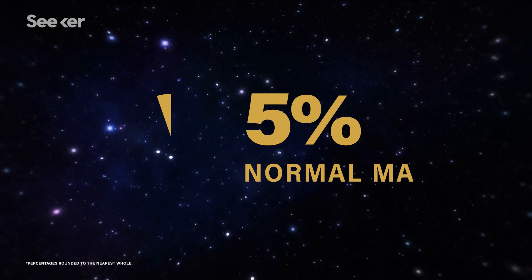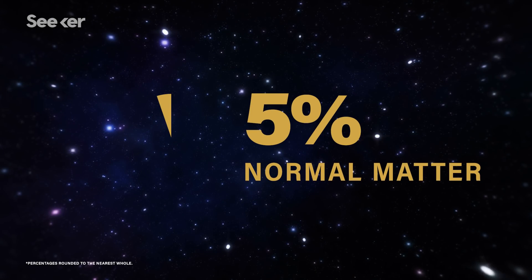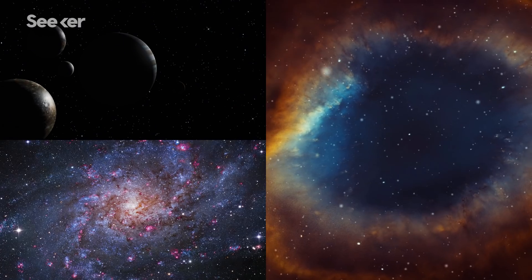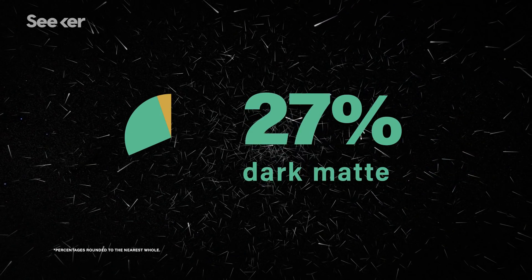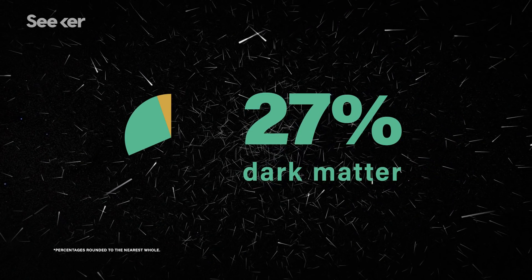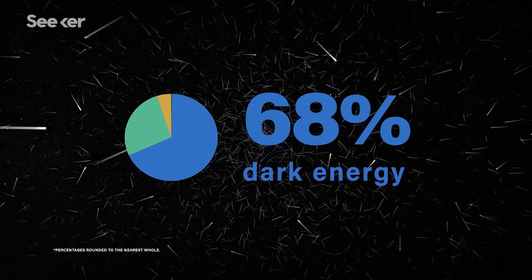It shows that less than 5% of the total mass of the universe is made up of what we call normal matter, like visible stars, planets, and galaxies. Then, 26.8% of the mass of the universe is dark matter, and the rest is made up of dark energy.